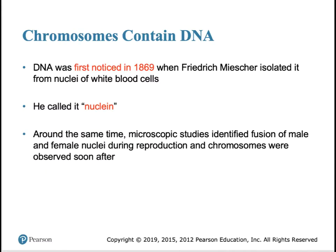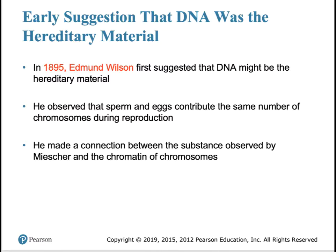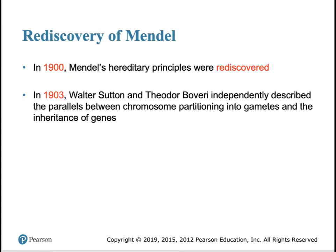The true chemical nature of DNA wasn't realized until late in the 1800s. At that time, Frederick Meischer isolated from white blood cells a substance he called nuclein. We give credit to this gentleman for naming the nucleus and also the acid within it, ribonucleic acid. About twenty-five years later, Edmund Wilson first suggested in written form that DNA might be the molecule of inheritance. He observed that sperm and eggs each contributed this nuclein material towards reproduction.